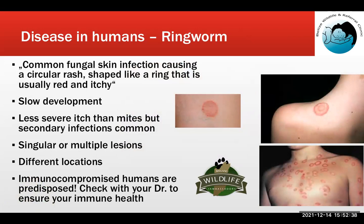Ringworm in humans is described as a common fungal infection causing a circular rash shaped like a ring that is usually red and itchy, though it tends to be much less itchy than burrowing mites. It develops slowly and can be a single lesion or progress to something more widespread. Different locations are affected depending on what parts are exposed. Similar to animals, immunocompromised humans are predisposed, so if you develop a ringworm infection it is recommended to check with your doctor to ensure your immune system's health.